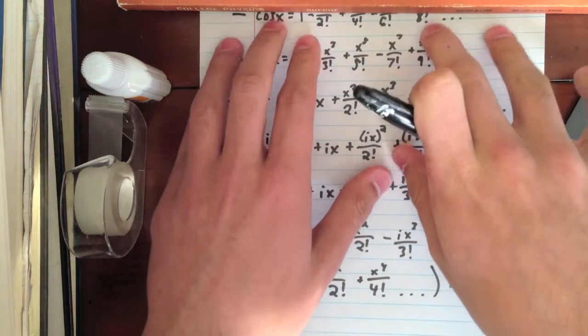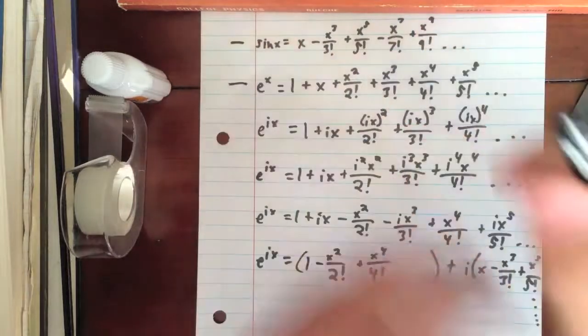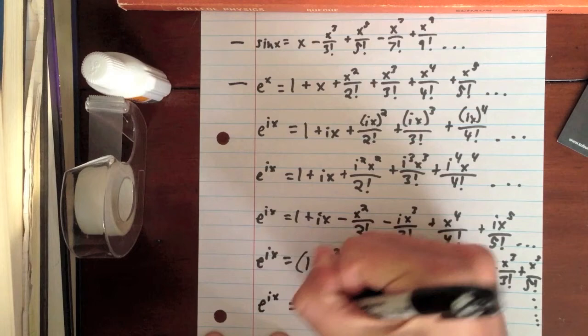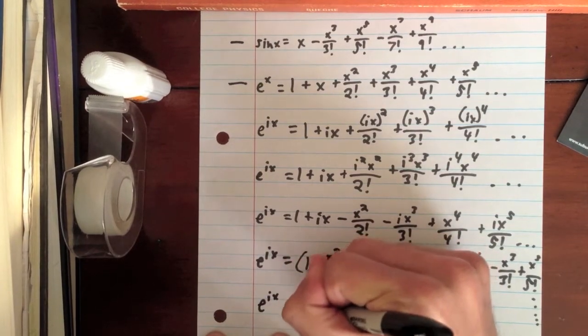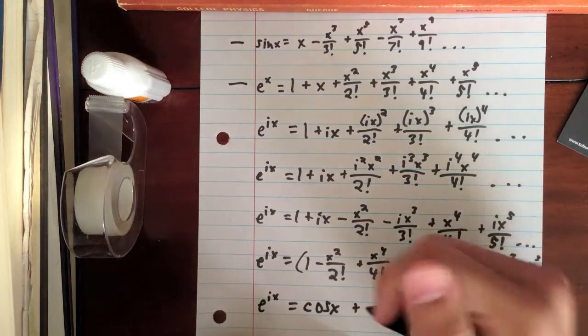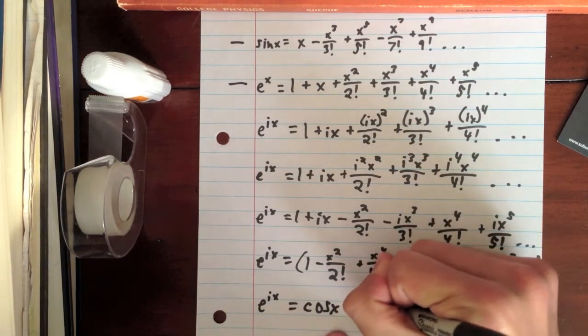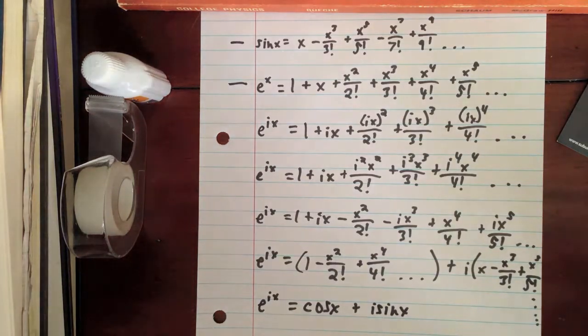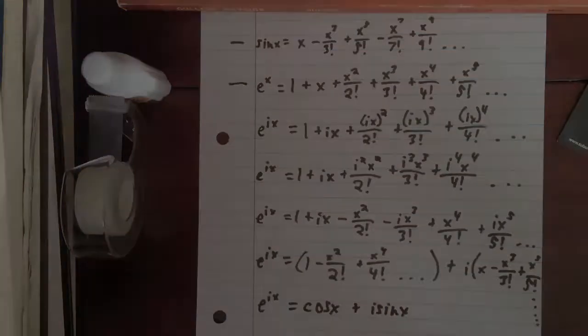So, we can assume, based on the polynomial approximations of cosine x and sine x, that e to the ix is equal to, in fact, cosine x plus, and remember, do not forget that i that we factored out, plus i sine x. That's all, guys. Thank you very much. This has been Amin, Carter, and Chris teaching you the proof.